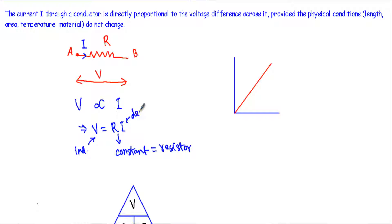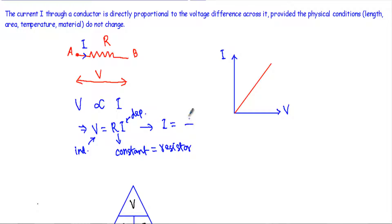If I want to draw the voltage and current relationship, I will take V on the x-axis and I on the y-axis. Since this is a linear relation, I will get a straight line. If I rearrange the equation, I get I equal to 1/R times V, where V is our independent variable and I is our dependent variable.